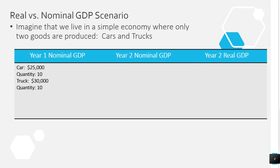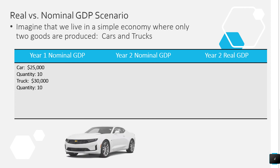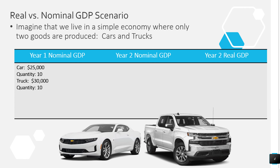To help you understand the difference between nominal and real GDP, here's a little example. Imagine that we live in a simple economy where only two goods are produced: cars and trucks. Let's say that cars cost $25,000 each and trucks cost $30,000 each. In year one, we produced 10 cars and 10 trucks. There's no government spending, no business investment, no exports or imports. This is just consumer spending on cars and trucks — that's our whole economy.